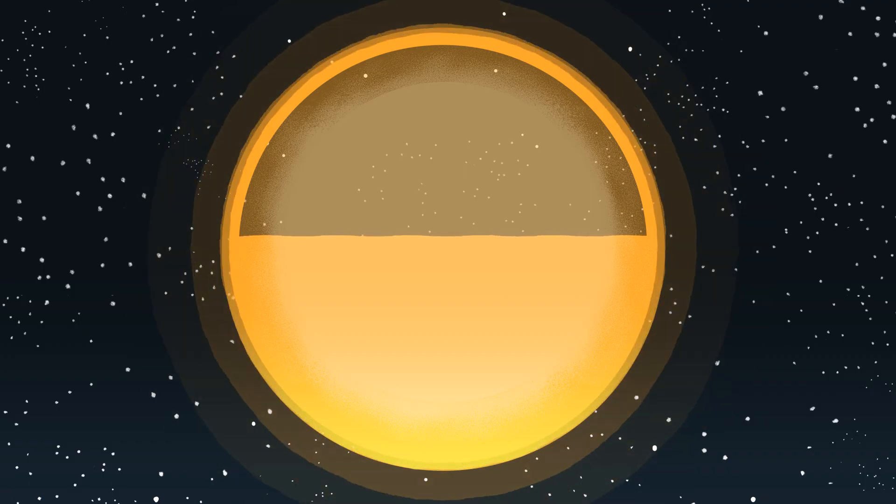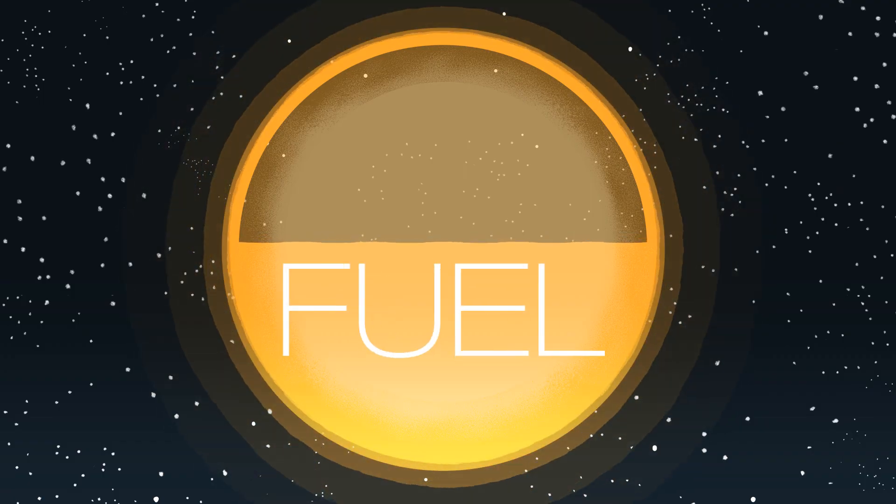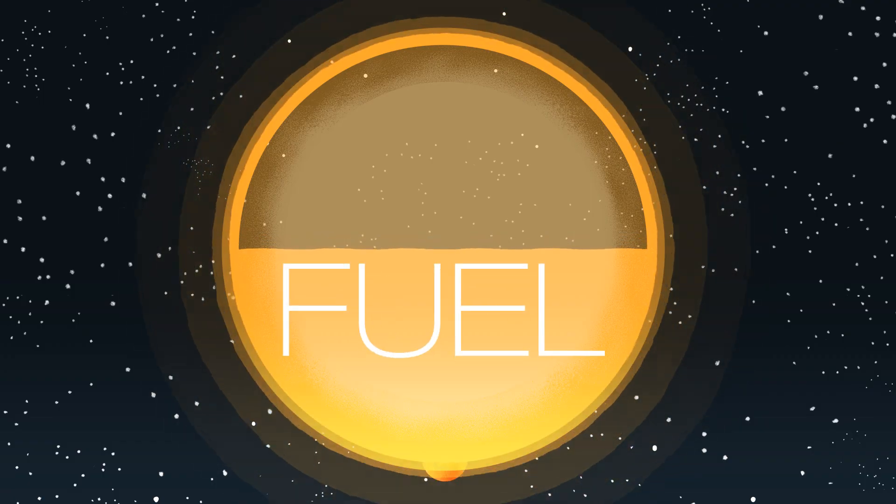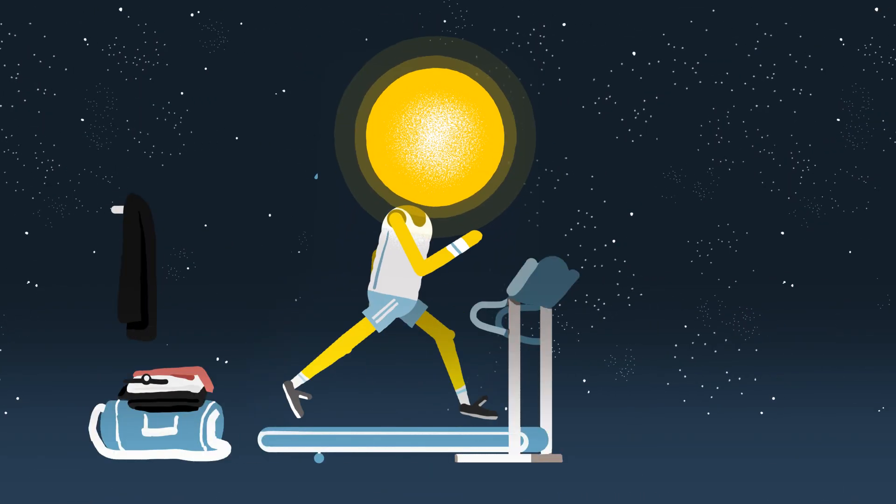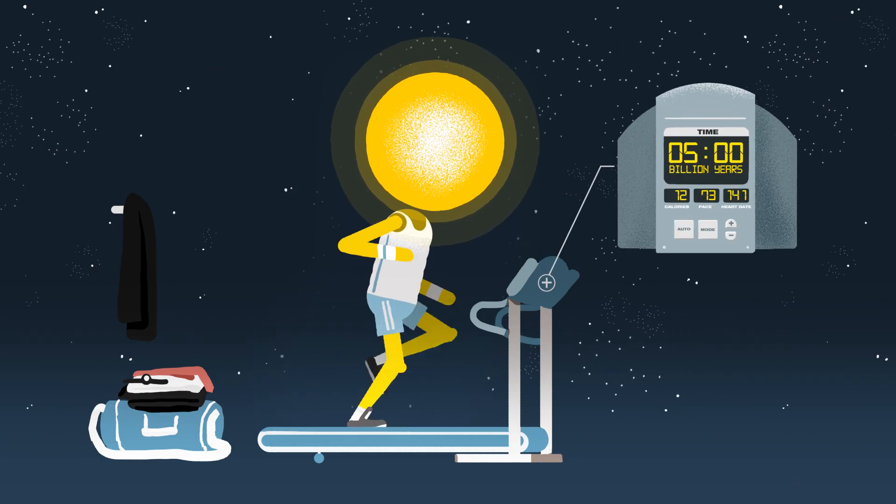Finally, if we know how much fuel our star has, we can find out how long it will last. It turns out the Sun is a middle-aged star, as it has enough fuel to keep going for another 5 billion years.